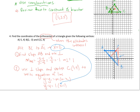We plug in x = 2 since we know from the other altitude that x = 2 at the intersection: y − 4 = 1(2 − 1) = 1, so y = 5. These altitudes intersect at the point (2, 5), which is the orthocenter for this triangle.